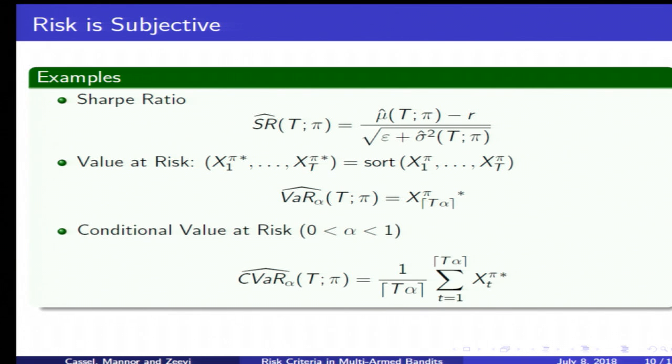Or better yet, the conditional value at risk which averages the rewards below a given percentile level. All of these are viable risk measures and we can consider other risk measures. The question is, do we need a customized analysis for each one of these and do we need to work hard? Or is there some sort of lucky scheme like in the mean variance case that we can generally apply to these?